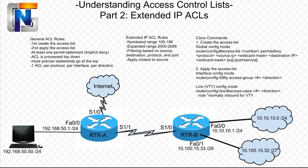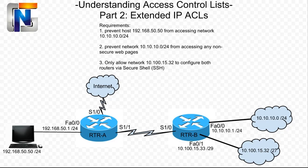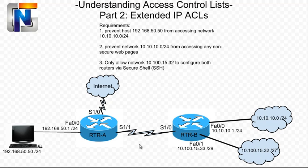Let's go ahead and look at the requirements we have for our exercise. First, we're going to prevent the host 192.168.50.50 from accessing network 10.10.10.0. Second, we're going to prevent network 10.10.10.0 from accessing any non-secure web pages. Third, we will allow only network 10.100.15.32 to configure each one of these routers via their VTY lines using only SSH.